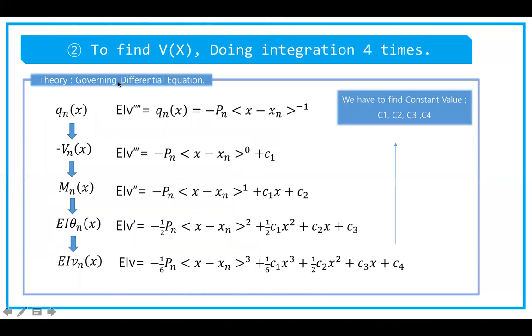This is the second step, finding v(x), the deflection, by doing integration four times. The first equation is q(x), which is given in the previous slide as negative Pn times (x minus xn) to the power of negative one.